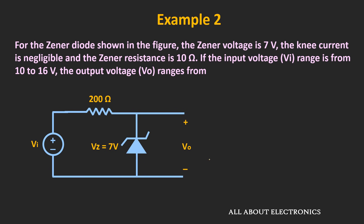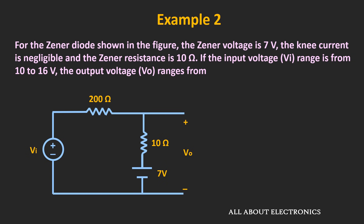Observing the circuit, the Zener diode is in no-load condition, and since the input voltage range of 10V–16V exceeds the Zener voltage of 7V, the diode always operates in the breakdown region. We can replace it with its equivalent circuit: a 7V source in series with a 10 Ω Zener resistance. The output voltage expression becomes Vout = 7V + (10 Ω × Is).